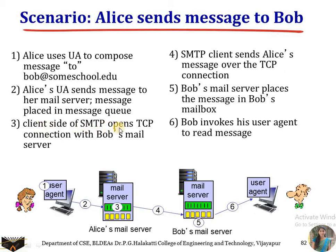The client-side SMTP opens a TCP connection with Bob's mail server. After receiving the email from the user agent, Alice's mail server checks the recipient address and establishes a TCP connection with Bob's mail server. Then the SMTP client sends Alice's message over the TCP connection to Bob's mail server.